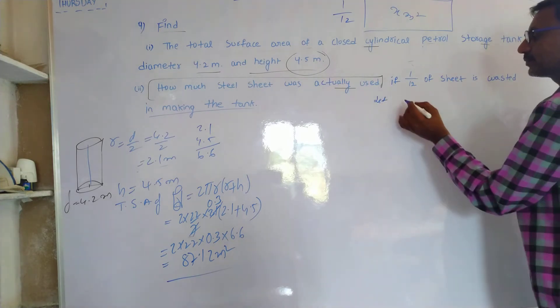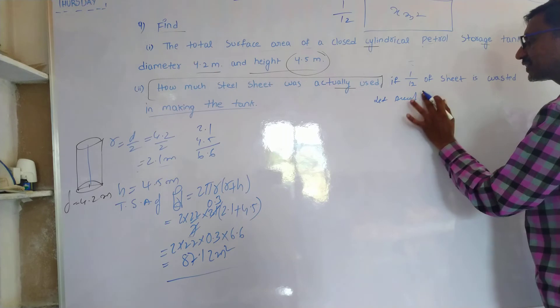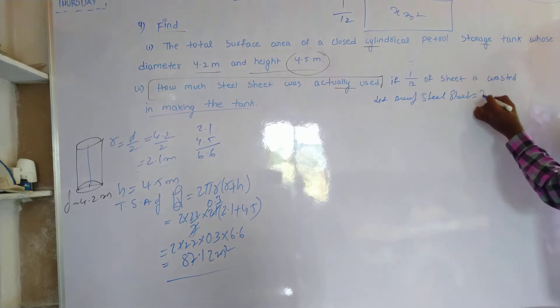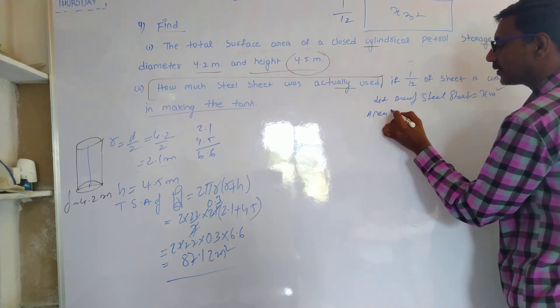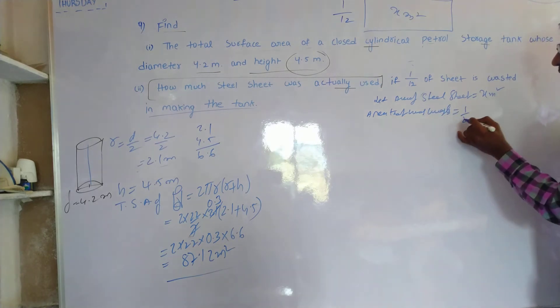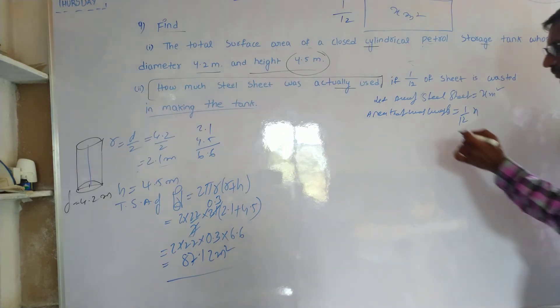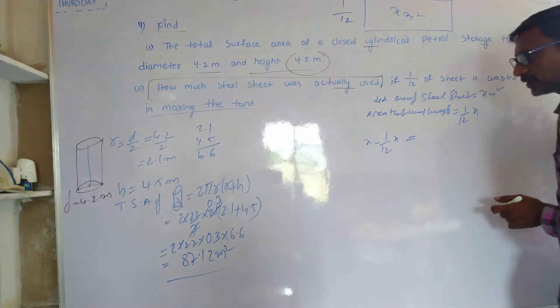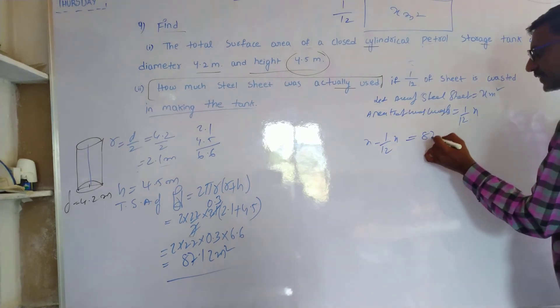Let the area of steel sheet be equal to X meter square. Area that was wasted is equal to 1 by 12th of X. That means X minus 1 by 12th of X makes total surface area 87.12.